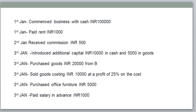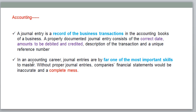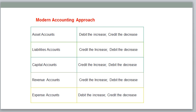Journal means irrespective of the type, all transactions are recorded — there is no segregation at all. Journal is a recording of the business transaction in the accounting books of a business. A journal contains: date, amount debit, and amount credit. Every transaction has a debit and a credit amount.